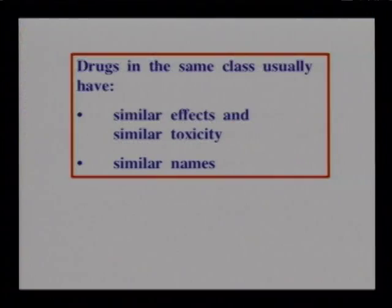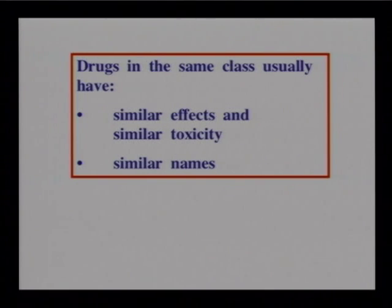When learning drugs, remember that drugs in the same class usually have similar effects, similar toxicity, and similar names. It is impossible to remember every drug in the pharmacopeia, so look for commonalities — similar effects, similar toxicities, and family names. As we start to talk about different types of drugs, I will be pointing out those family names.